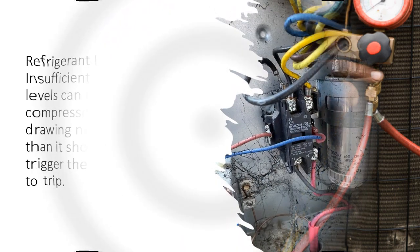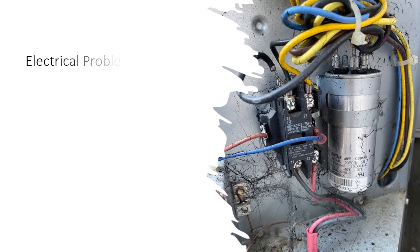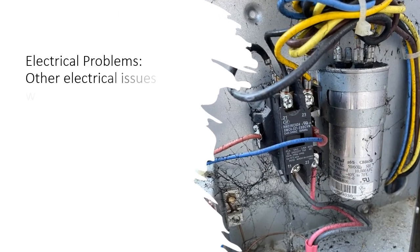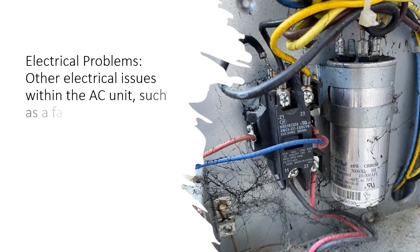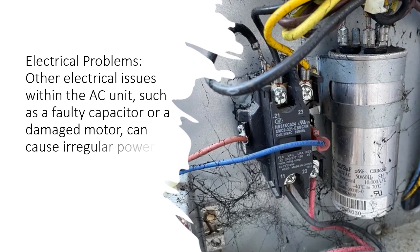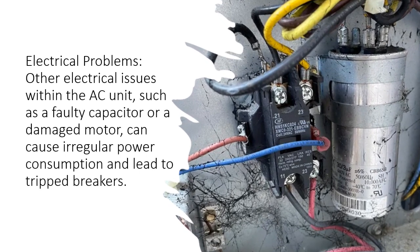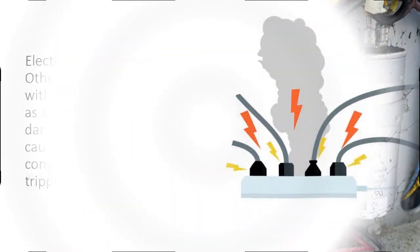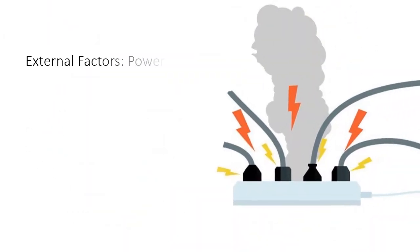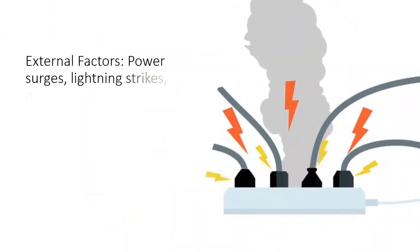Electrical problems: Other electrical issues within the AC unit, such as a faulty capacitor or a damaged motor, can cause irregular power consumption and lead to tripped breakers.